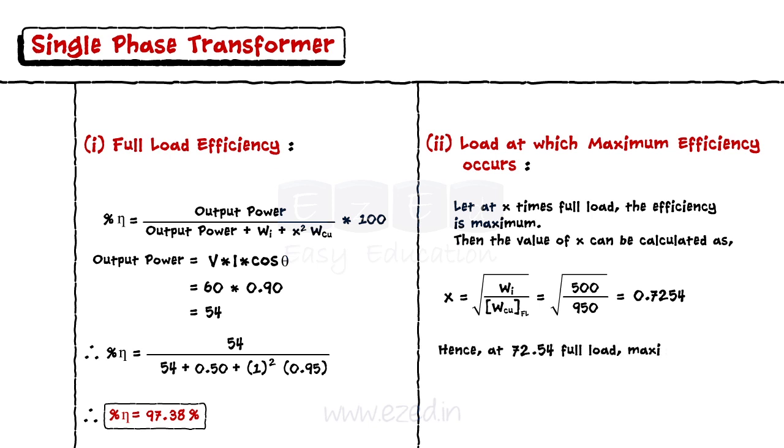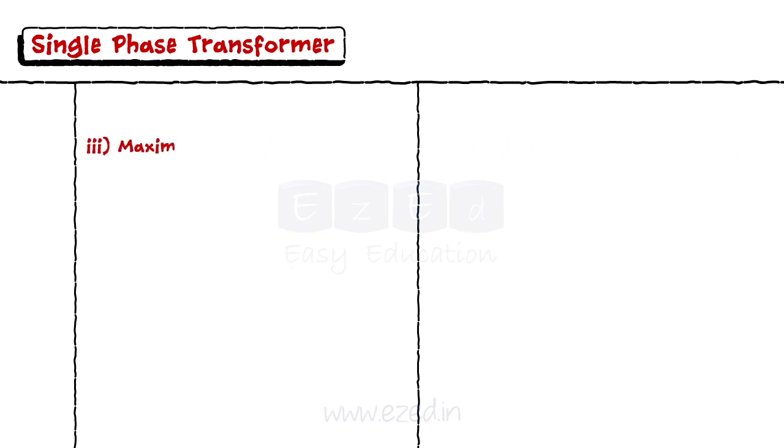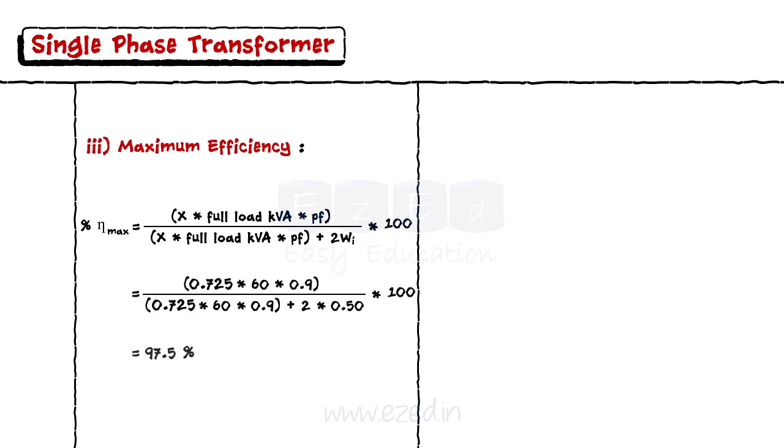Thus, at this load, we achieve maximum efficiency. The formula for maximum efficiency is: x times full load kVA times power factor upon x times full load kVA times power factor plus 2 times core loss, times 100. Putting all the values, we get the maximum efficiency equal to 97.5%.